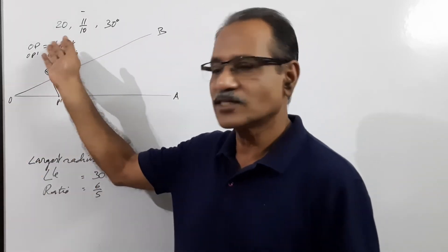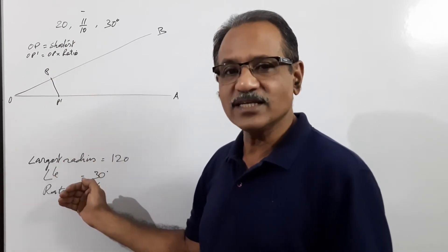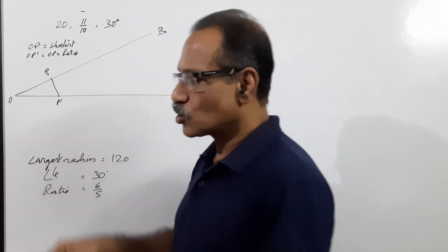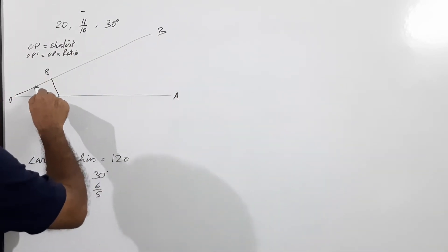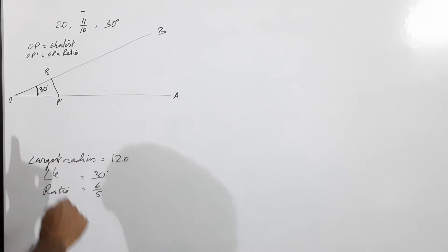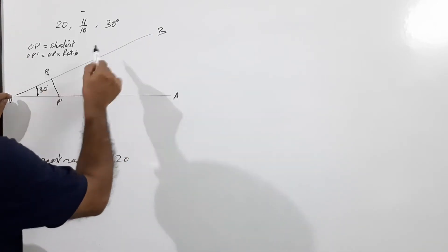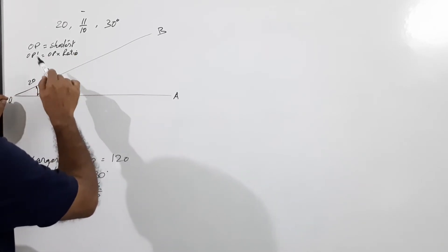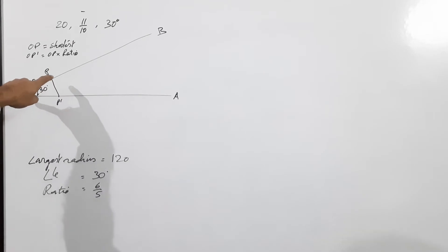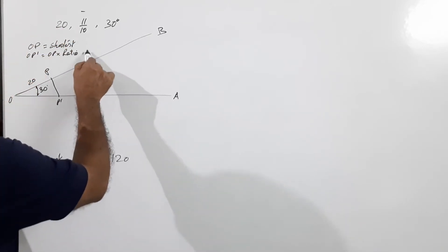What we do is draw two lines OA and OB at 30 degrees. On OB locate point P, where OP is the shortest radius, which is 20 in this case. Calculate OP dash equals OP into ratio, which is 20 into 11/10, you get 22. So OP dash is 22.